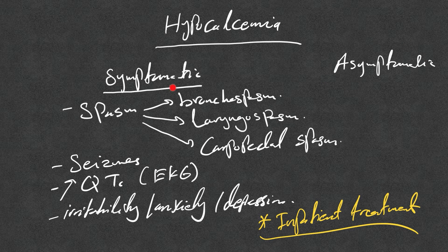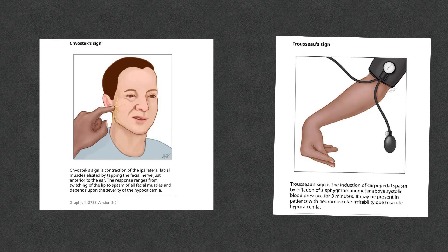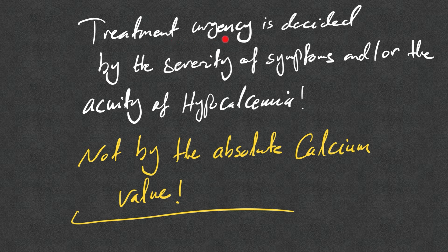Hypocalcemia can be asymptomatic, mildly symptomatic, or symptomatic. Symptoms requiring urgent treatment include spasm — remember bronchospasm, laryngospasm, or carpopedal spasm — seizures, prolonged QTc, irritability, anxiety, or depression (though the latter are non-specific). Treatment urgency is decided by the severity of symptoms and the acuity of hypocalcemia, not by the absolute calcium level alone.